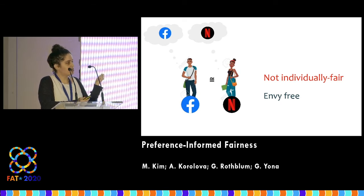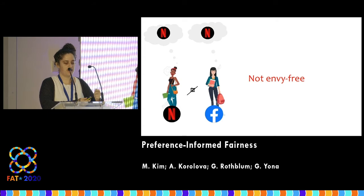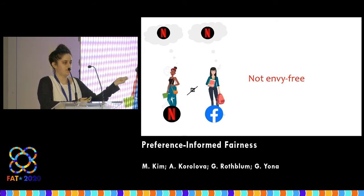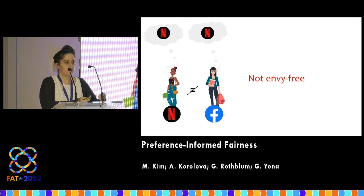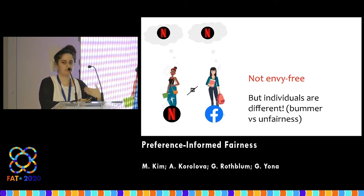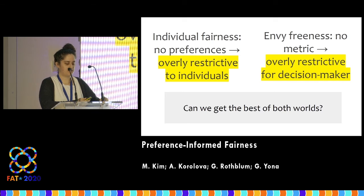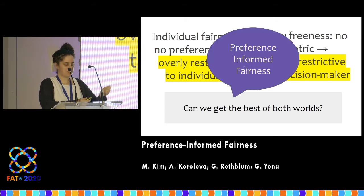But this argument didn't use the fact that the two individuals are similar at all. Consider two other individuals who don't have the same GPA — the one getting the Facebook interview is envious of the one getting the Netflix interview because she wants it. But if there are few Netflix interviews, some people will be unhappy. This is exactly the conceptual contribution of individual fairness: using the metric to distinguish outcome distributions that make people unhappy from those that are inherently unfair. So envy-freeness is also overly restrictive when individuals differ in their qualifications. Naturally, the question is, can we get the best of both worlds? Of course we can — and this is our paper.